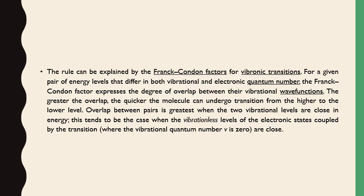Kasha's rule can be explained by the Franck-Condon factor for vibronic transitions. For a given pair of energy levels that differ in both vibrational and electronic quantum numbers, the Franck-Condon factor expresses the degree of overlap between their vibrational wavefunctions. The greater the overlap, the quicker the molecule can undergo transitions from a higher to a lower level. Overlap between a pair is greatest when two vibrational levels are close in energy, which tends to be the case when the vibrational levels of the electronic states coupled by the transition are close. The Franck-Condon principle explains why molecules move towards the lower state before emission — the degree of overlap of the vibrational wavefunctions is responsible.